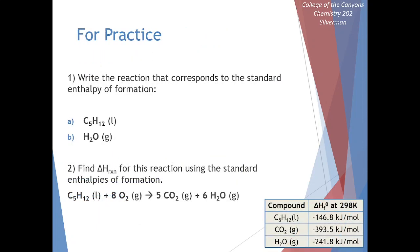We can look at this in practice. If we have C5H12 — liquid pentane — we can write the reaction that corresponds to its enthalpy of formation. We need to build exactly one mole of pentane starting from individual elements. We have carbon and hydrogen. Carbon exists at standard conditions as graphite, so we write C(s) or C(graphite). Hydrogen at standard conditions exists as a diatomic gas, H2(g).